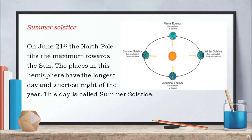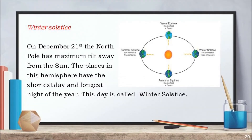On June 21st, the north pole tilts the maximum towards the sun. The places in this hemisphere have the longest day and shortest night of the year. This day is called summer solstice. And on December 21st, the north pole has maximum tilt away from the sun. The places in this hemisphere have the shortest day and the longest night of the year, and this day is called the winter solstice.